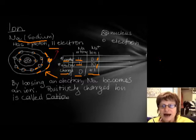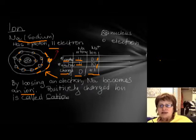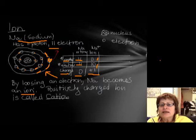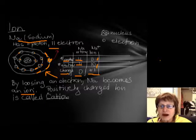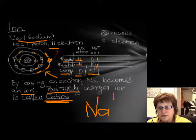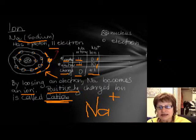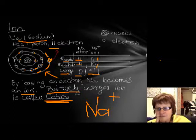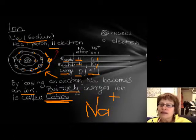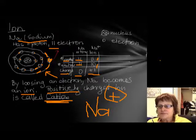Ion is the word for an atom which has an electric charge—not neutral anymore. It could be positive or negative. Because sodium lost one electron, it's positively charged and we call that a cation. The symbol is Na with one positive charge.